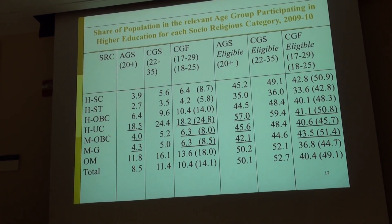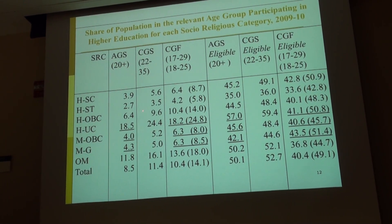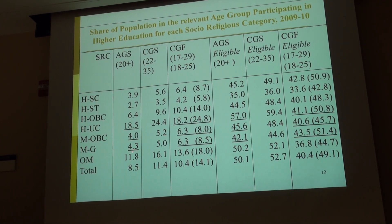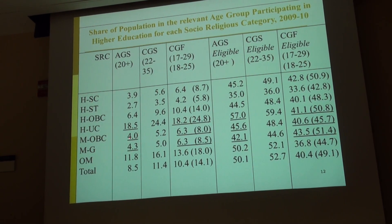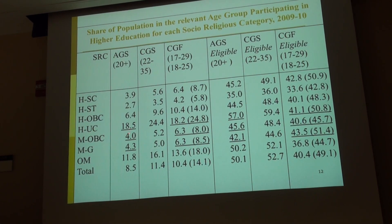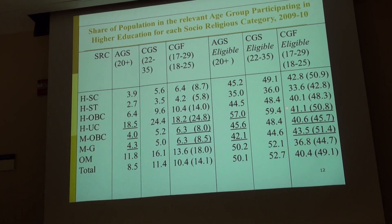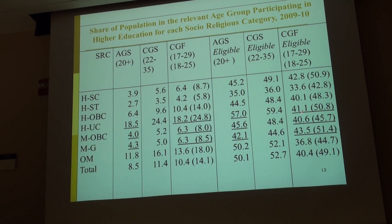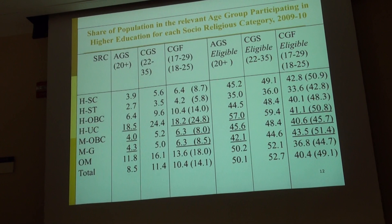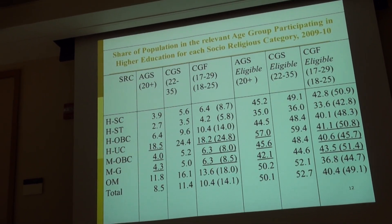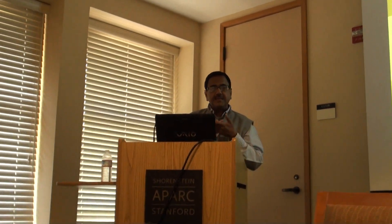To exemplify further, comparing Muslim general and Muslim OBCs: 4% share of population who are graduates versus 8.5%, which is more than four times. But when you look at the eligible population, it is almost the same — 40.6 versus 41.1. As soon as you look at the eligible population among marginalized groups and compare with higher castes, the gap between Muslims and other groups declines dramatically.